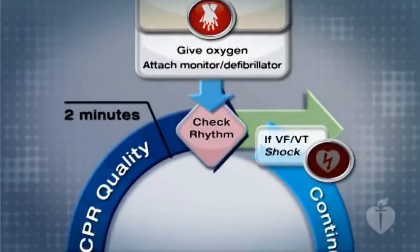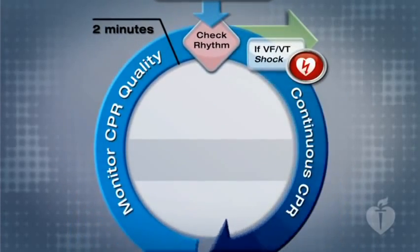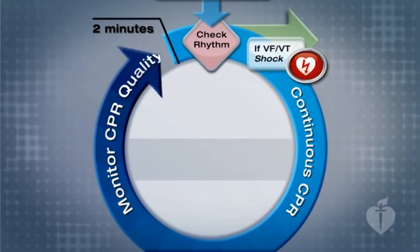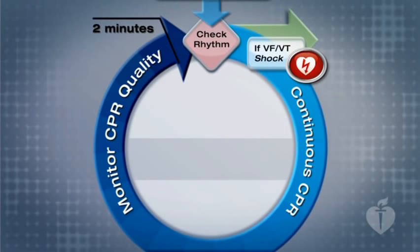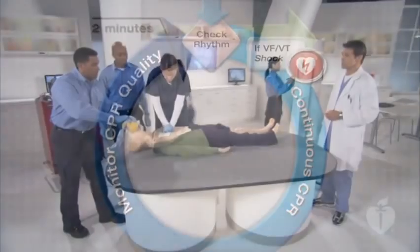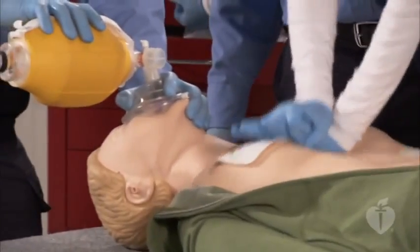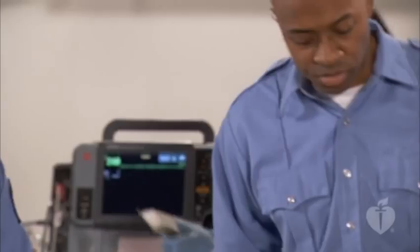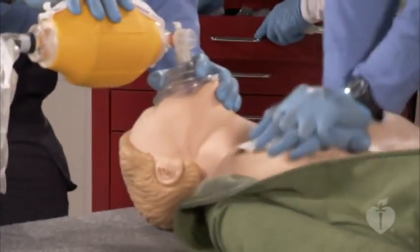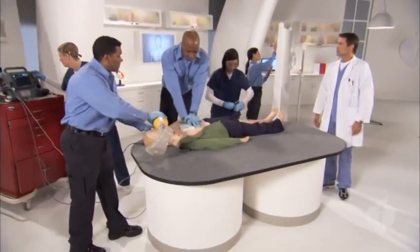With ACLS, patient care is organized around two-minute periods of high-quality CPR. When the two minutes have ended, that's the time to quickly assess the patient with a rhythm or pulse check and provide defibrillation if necessary. The pause should also be used to rotate compressors. Preparing as a team for these pauses and choreographing your movements improves patient care. Remember, the AHA wants these pauses in CPR to be ten seconds or less.